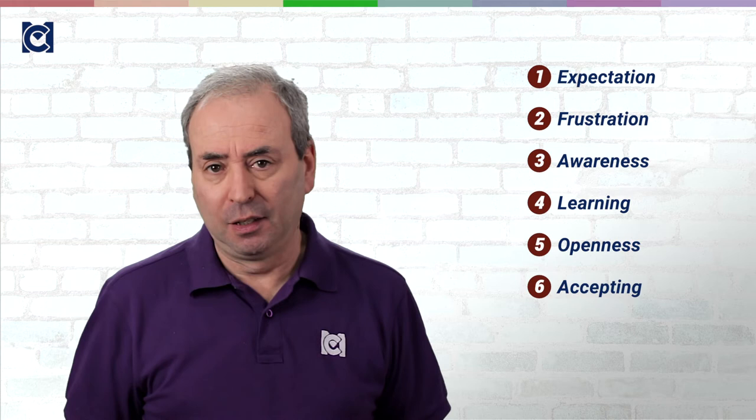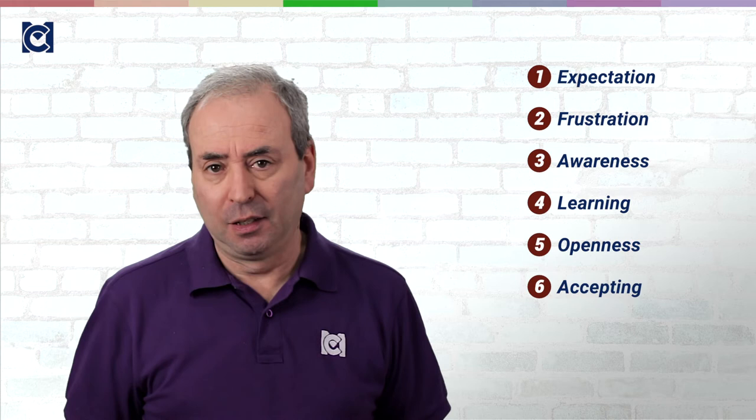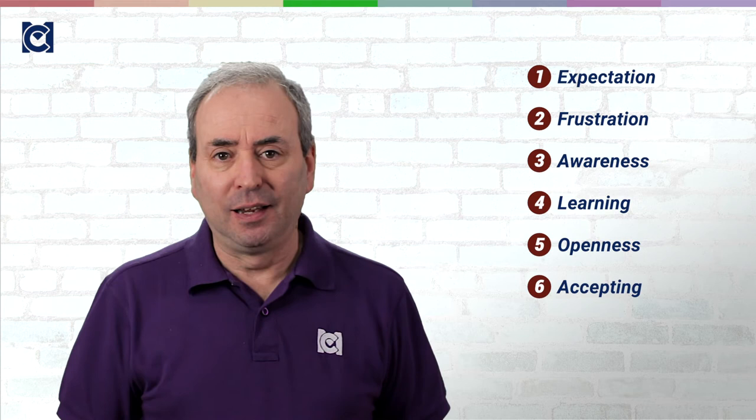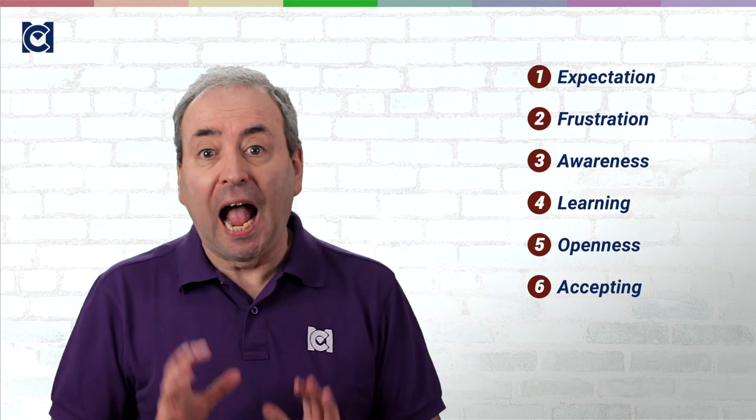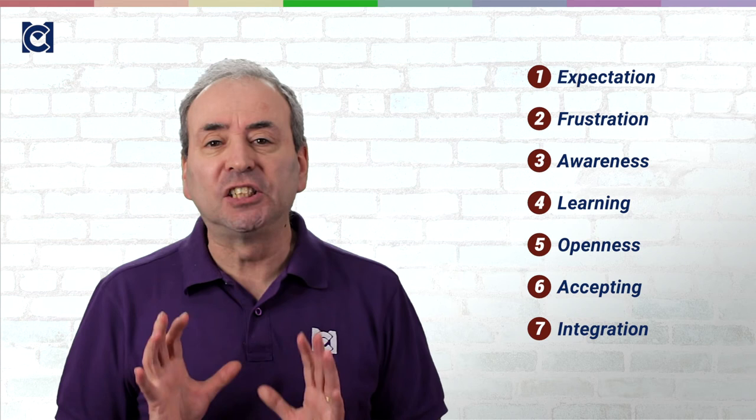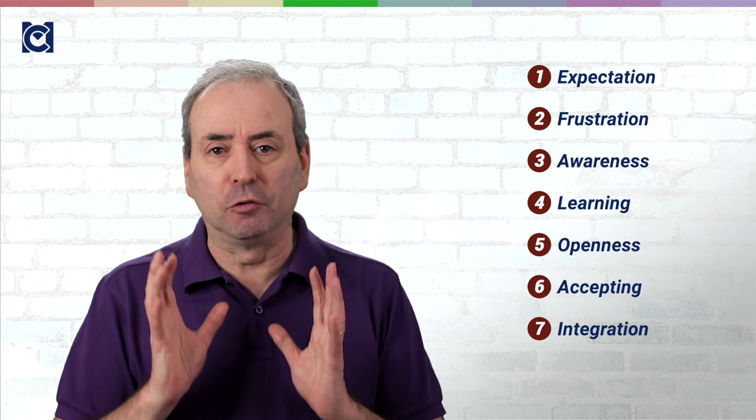Now at step six you start to expect people to behave as themselves rather than the way that you would and to understand and welcome that behavior. And the result of that at step seven is that relationships start to improve and so does performance. You are well on your way to becoming multi-culturally sensitive.